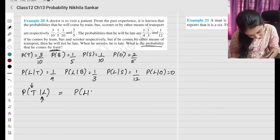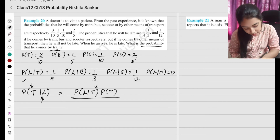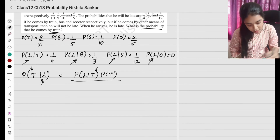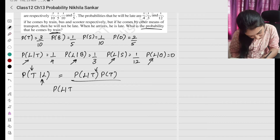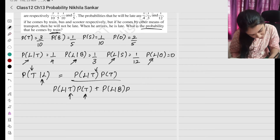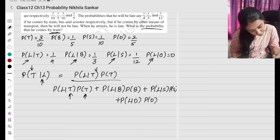Probability of T given L equals probability of L given T times probability of T, divided by: probability of L given T times P(T), plus probability of L given bus times P(bus), plus probability of L given scooter times P(scooter), plus probability of L given others times P(others).